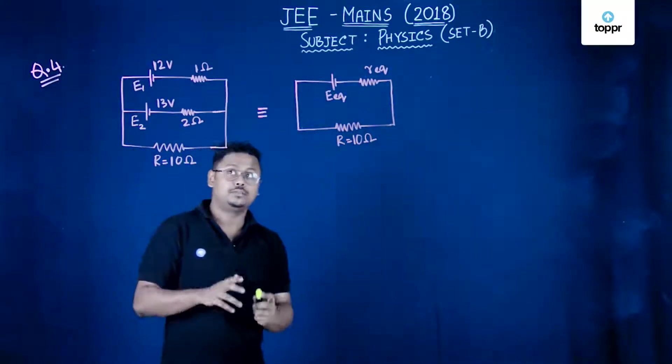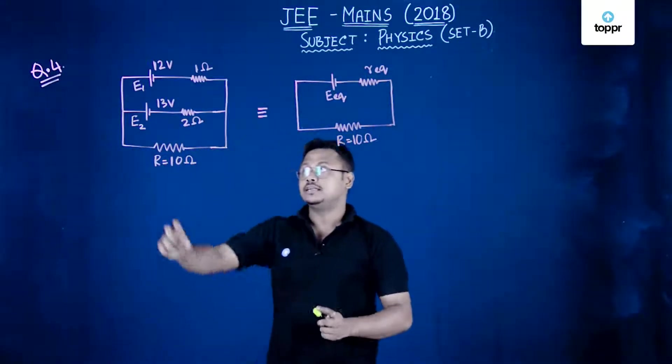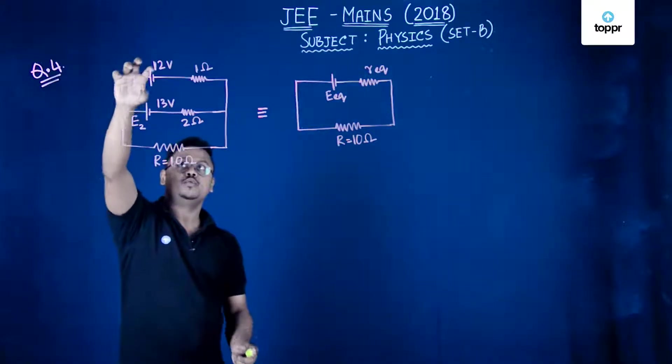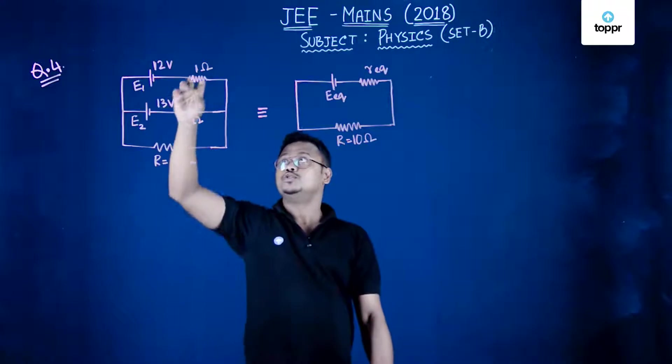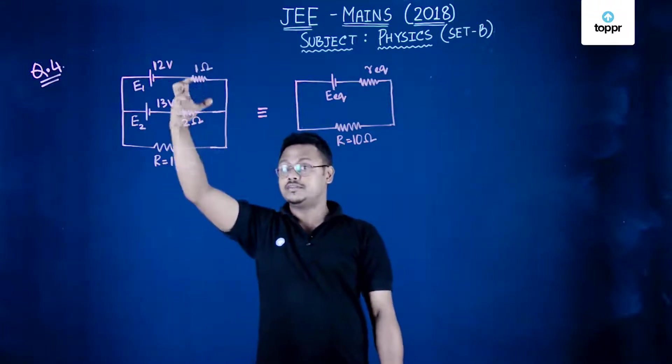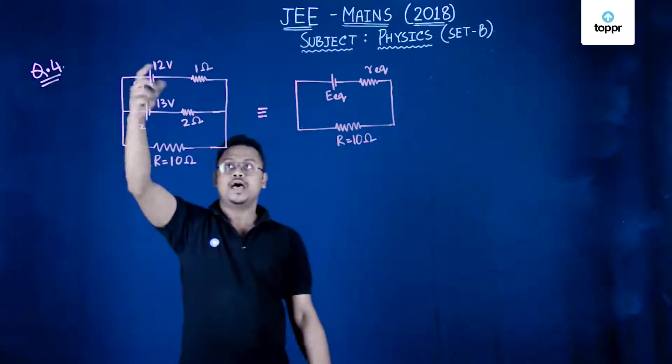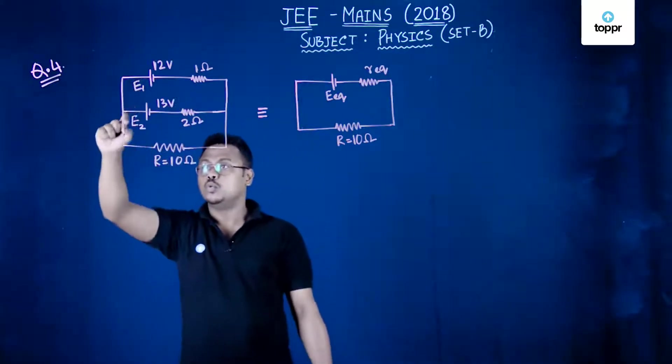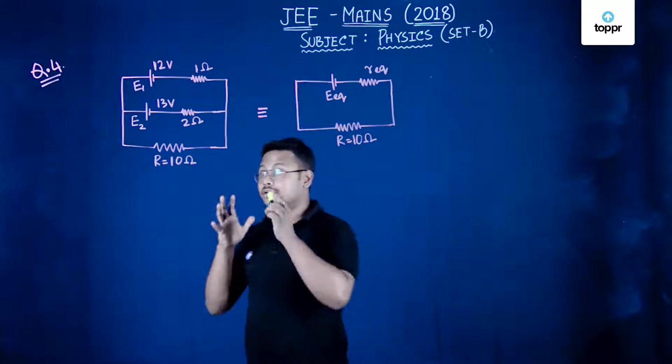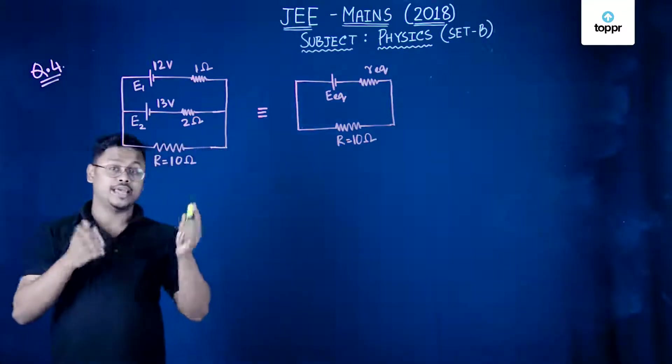Now let's look at question number four. It has said that there are two batteries given, one is of EMF 12 volt, another is of EMF 13 volt. This is one ohm internal resistance corresponding to E1 and 2 ohm is internal resistance corresponding to E2, and they are connected in parallel with an external resistance or external load of 10 ohm.